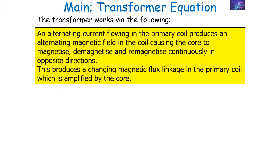A transformer works by the following idea. An alternating current flowing in the primary coil produces an alternating magnetic field in the coil, causing the core of the transformer to magnetise, demagnetise, and remagnetise continuously in opposite directions. This produces a change in magnetic flux in the primary coil, which is then amplified by the core of the transformer.